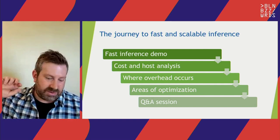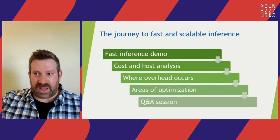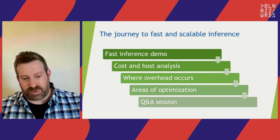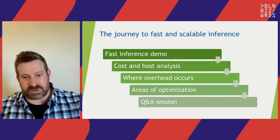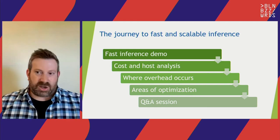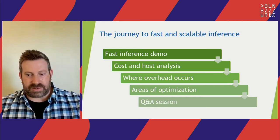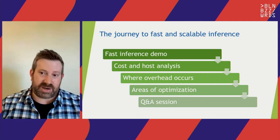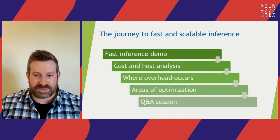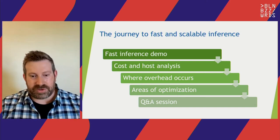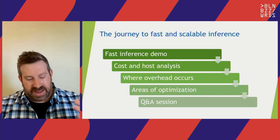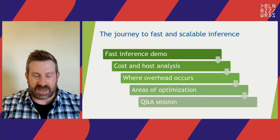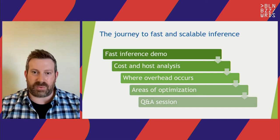The talk is a bit flipped on its head. I'll cover what cost and hosting analysis looks like for this kind of system, because when teams want to get started with approximate nearest neighbor search or transformer model inference, it's a cost they're not used to and it can be quite large. Then we'll talk about how overhead occurs and how we reduce it, followed by areas of optimization — models, software, hardware — and hopefully time for a question or two at the end.